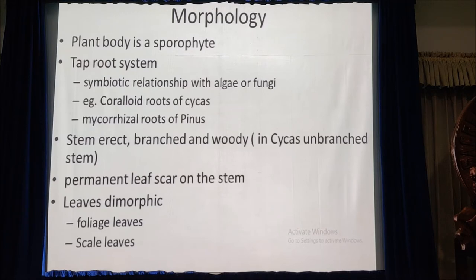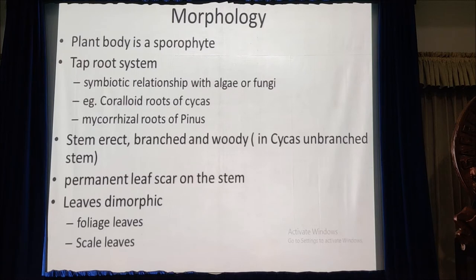And mycorrhizal roots of Pinus. The stem is erect, branched and woody. But in Cycas, the stem is unbranched in nature. Presence of permanent leaf scars on the stem is a characteristic feature of this gymnosperm group. The leaves are usually dimorphic — two types of leaves: foliage leaves and scale leaves. Foliage leaves are green, needle-shaped or pinnately compound, and scale leaves are minute and deciduous.